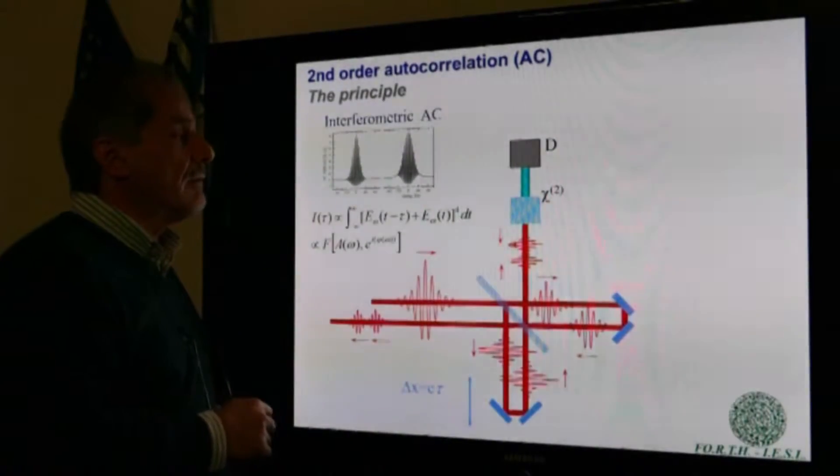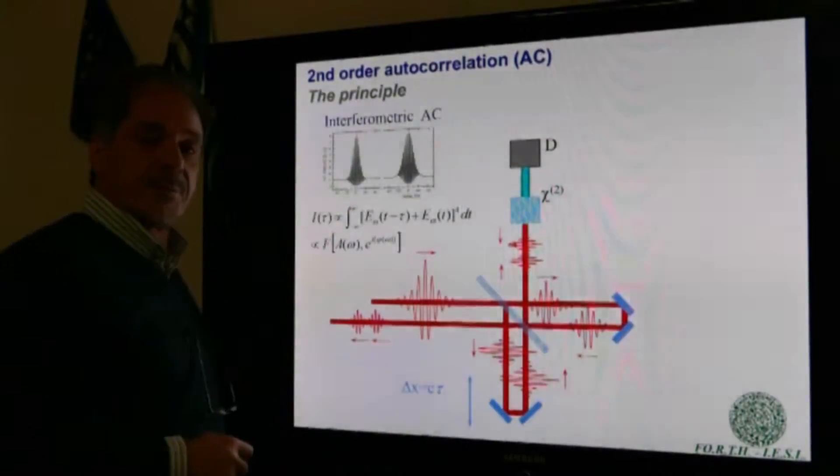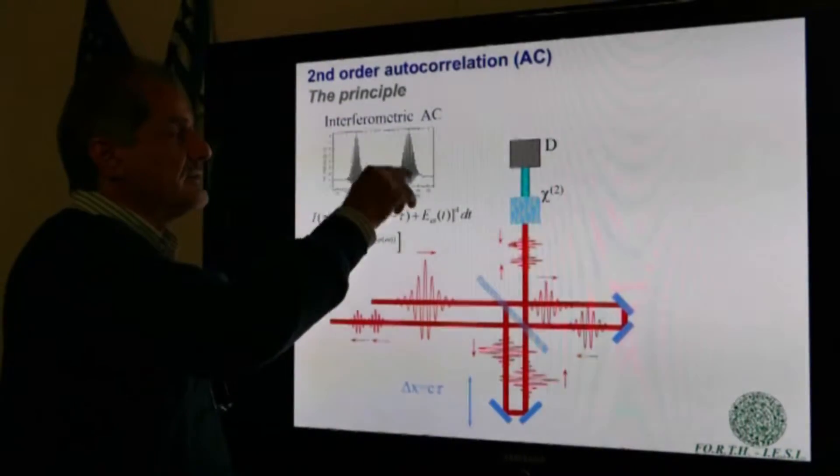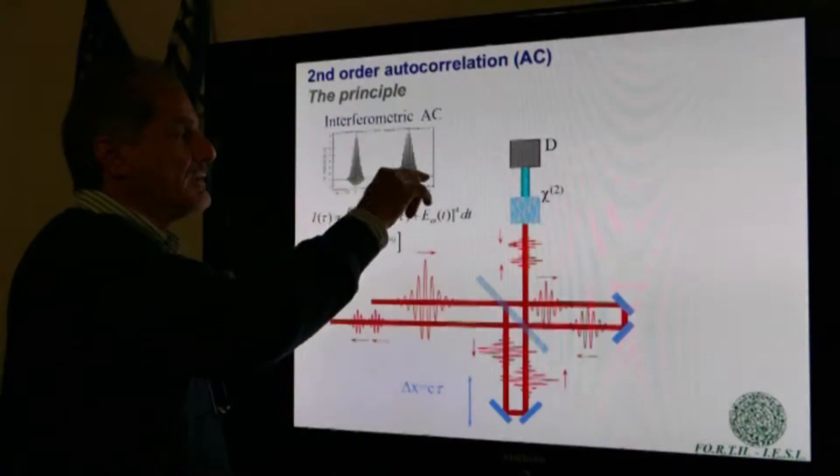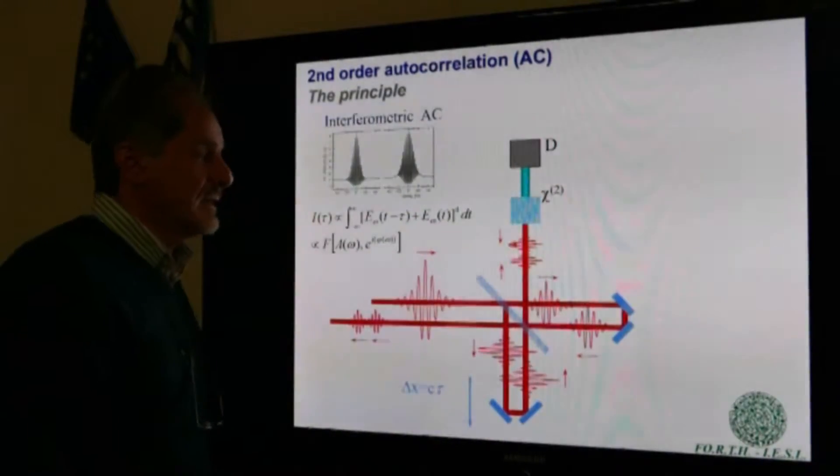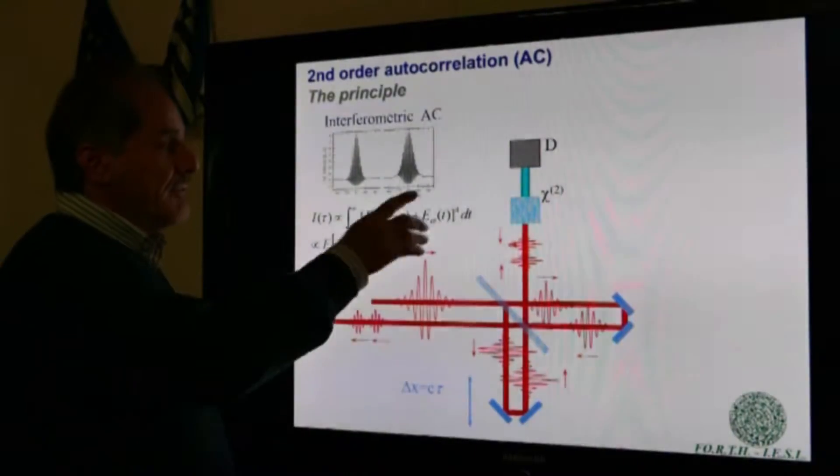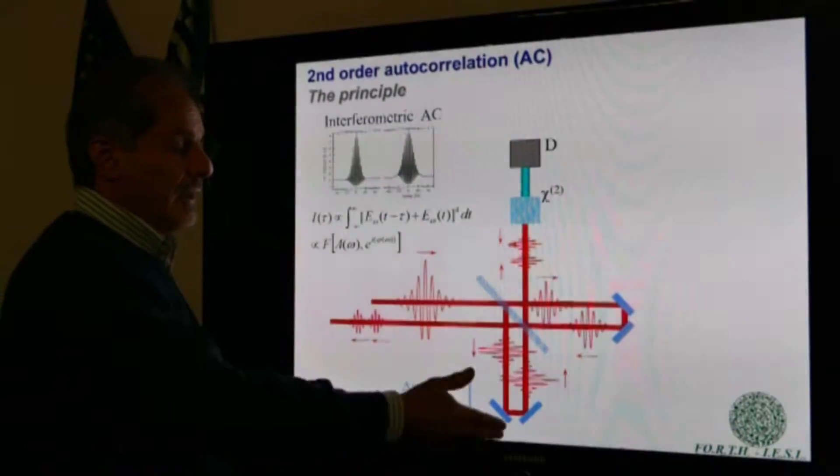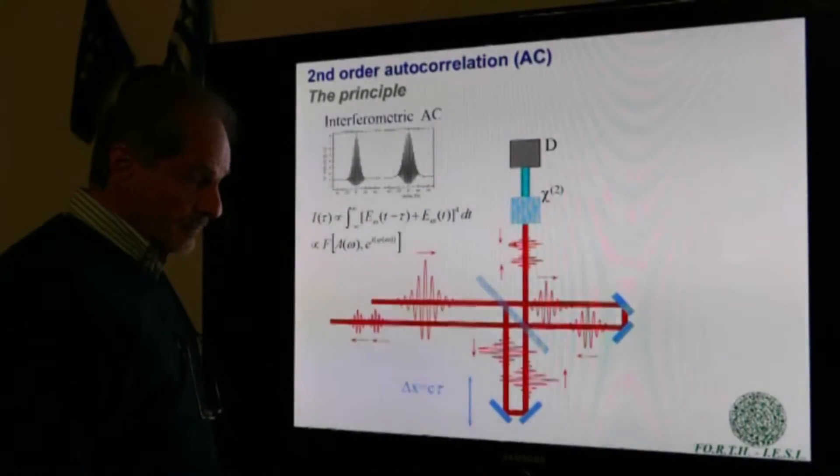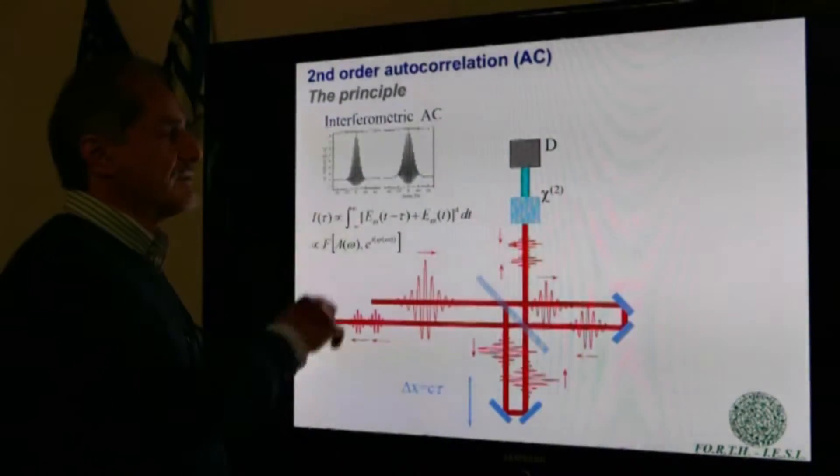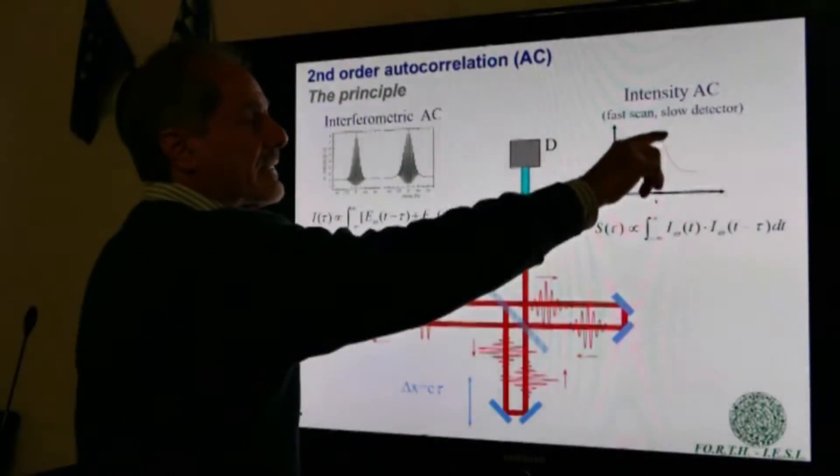These two traces are for a Fourier transform limited pulse or for a chirped pulse, and you immediately see the differences. Using the chirped pulse, we have these elevated wings here. If the detector is slow or if the scan is very fast, then what is measured